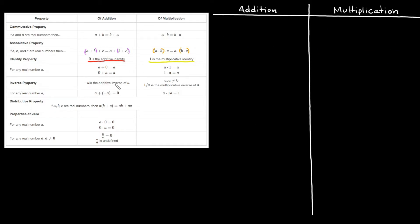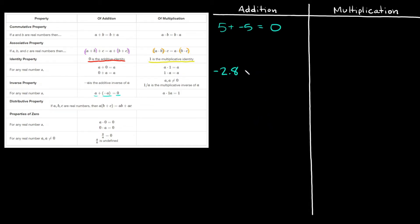Now let's move on to the inverse property. The inverse property says when you have a number and you add the negative, or the opposite of it, your answer is 0. So if you had the number 5, the opposite would be negative 5, and adding those two together gives 0. Or if you had negative 2.8, the opposite is positive 2.8, and adding those together again gives 0.